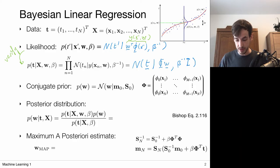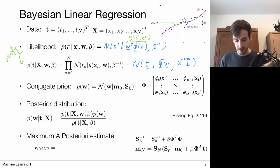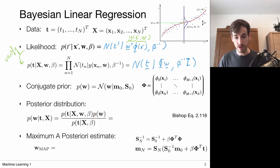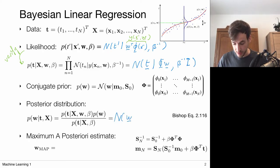The model parameters W are most likely to take on the values described by the mean of the Gaussian prior, with uncertainty described by the covariance matrix. The subscript zero denotes the mean and covariance without observing any data points. Now I have a likelihood given by a Gaussian and a prior given by a Gaussian. The posterior is obtained via the product of these two Gaussians. It turns out that the product of two Gaussians gives another Gaussian, parameterized by a new mean and covariance matrix Sn.